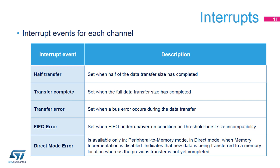Each DMA stream is designed with this group of interrupt events. The half-transfer interrupt flag is set when half the data has been transferred. The transfer complete flag is set when the transfer is complete. The transfer error flag is set when an error occurs during the data transfer. The FIFO error flag is set whenever a DMA FIFO underrun or overrun condition is detected, or due to threshold burst size incompatibility. The direct mode error flag is set in peripheral-to-memory mode in direct mode when memory incrementation is disabled, indicating that new data is being transferred to a memory location whereas the previous transfer is not yet complete.